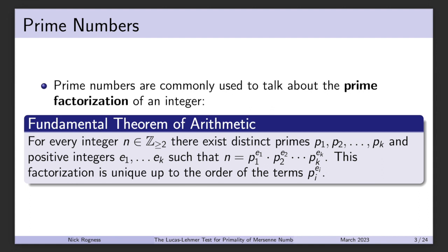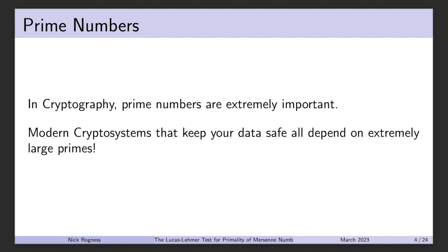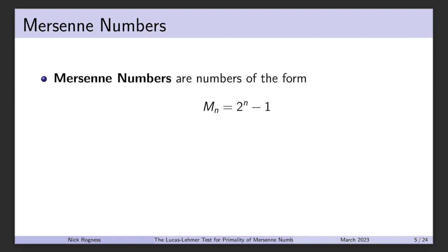Another purpose for prime numbers is cryptography. Prime numbers are extremely important in cryptography because modern cryptosystems keep your data safe, and all of those systems depend on extremely large primes. So there is a high demand for extremely large primes — and one way we can find them is through Mersenne numbers.